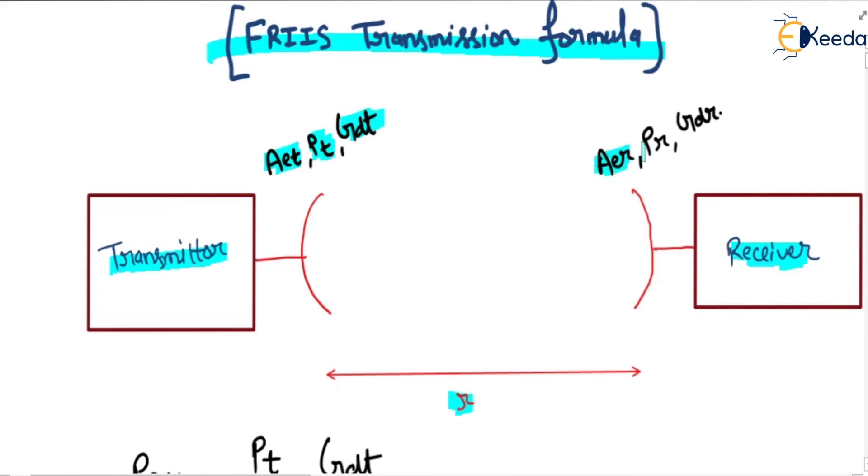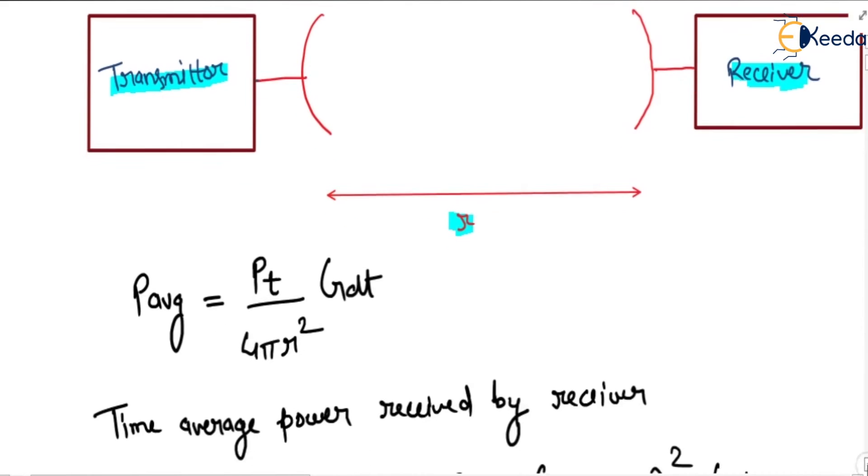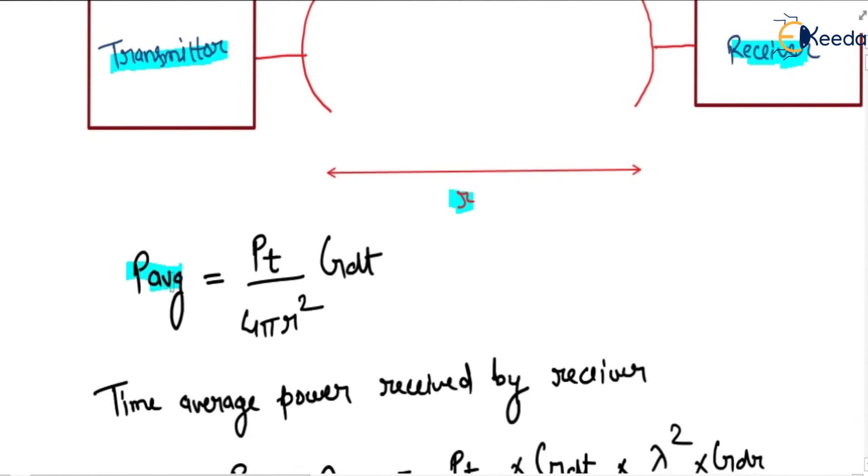The receiver has effective area AER, received power PR, and directive gain GDR.